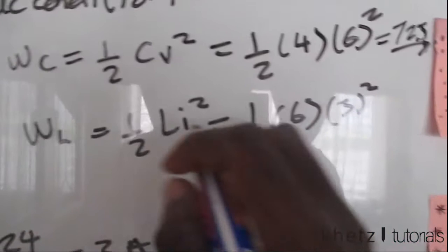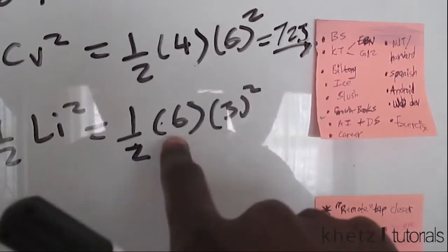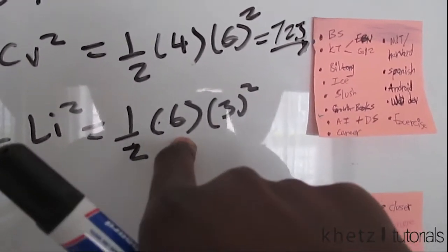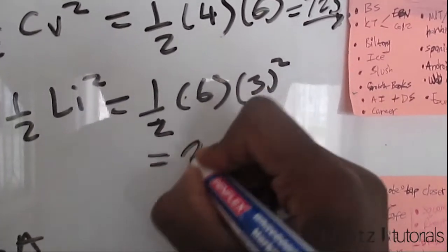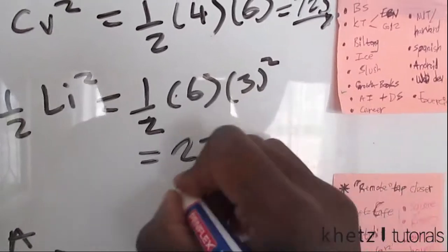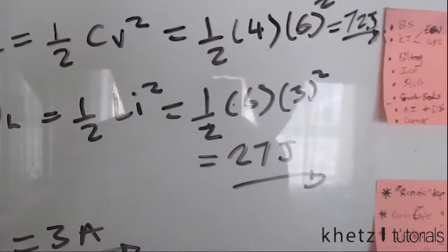And WL, we have 9 here and we have 6, so 9 times 6 is 54 divided by 2 is 27. So you have 27 here, 27 joules. So that is how you solve this particular problem.